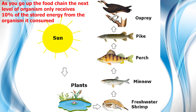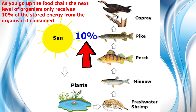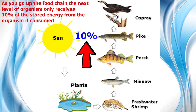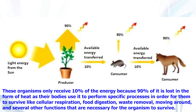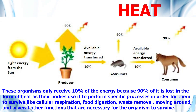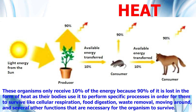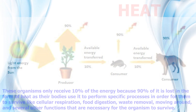As you go up the food chain, the next level of organisms only receives 10% of the stored energy from the organisms it ate or consumed. These organisms only receive 10% of the energy because most of it is lost in the form of heat as the body performs specific processes in order to survive, like cellular respiration, food digestion, waste removal, moving around, and several other functions that are necessary for the organism to survive.